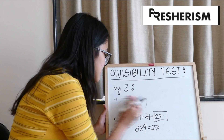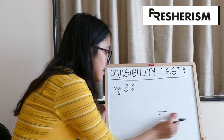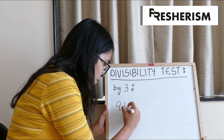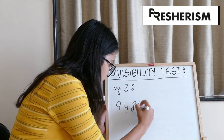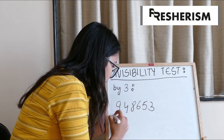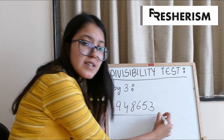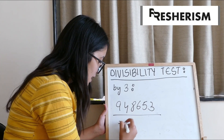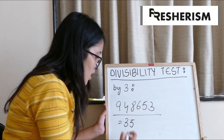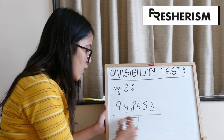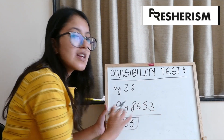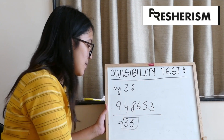Let us take another example: 948,653. If we sum all the digits of this number, we get 35, which is not divisible by 3. Hence, this number is not divisible by 3.